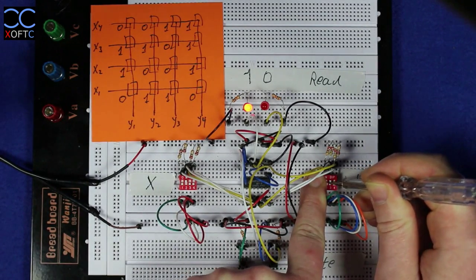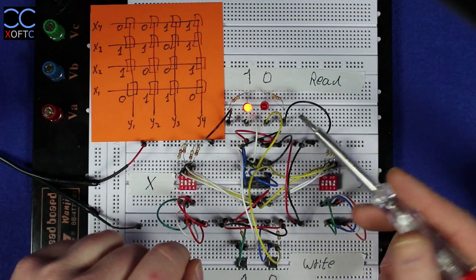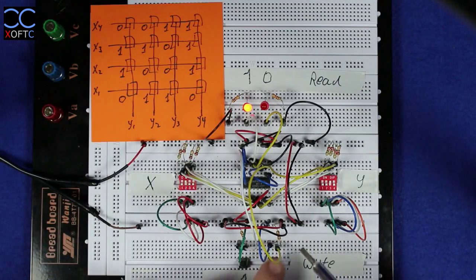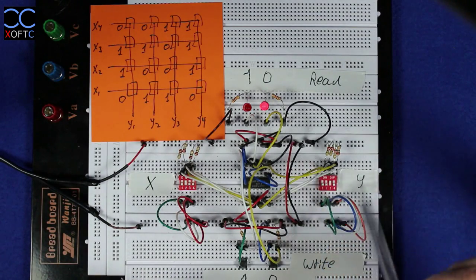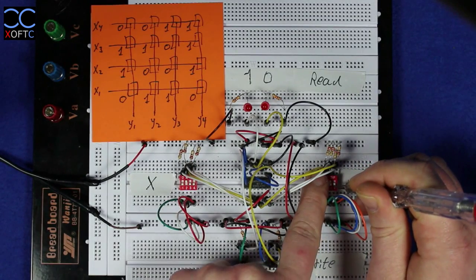And I'm going to put Y3 to high. And again, Y3 also received the one for some random reason and we're going to set it to zero and we're going to move to the last bit, which is number four.